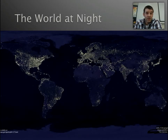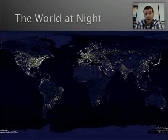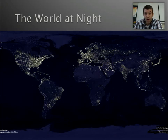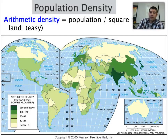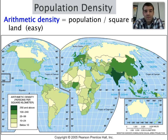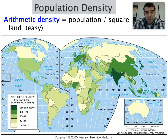We can also look at population centers by development of electricity. When we look at this image, the lights that designate these areas also happen to correspond with high population areas and highly developed areas of the world. That brings us to our three major concepts: population density, physiological density, and agricultural density.